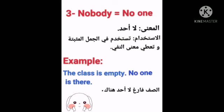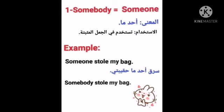Now let's see somebody or someone. Both mean 'someone / a certain person.' We use somebody or someone in affirmative sentences. Example: someone stole my bag — meaning a certain person stole my bag. Someone and somebody are equal, they give the same meaning, and we use them in affirmative sentences meaning 'someone' or 'a certain person.'